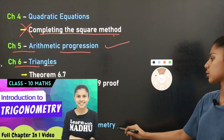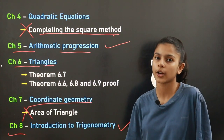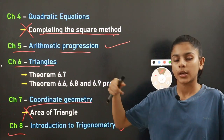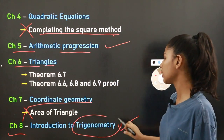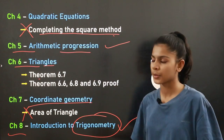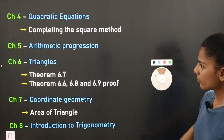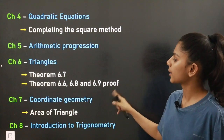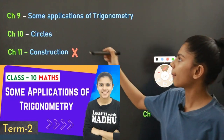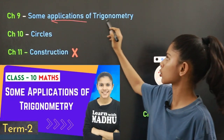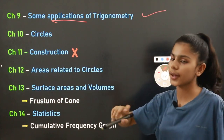Chapter number eight is Introduction to Trigonometry. Nothing has been reduced — it is the whole chapter. It is a very important chapter, especially if you are going to take Maths in class 11 or 12. Chapter number nine covers applications of trigonometry and real-life uses of trigonometry. Nothing has been reduced from this chapter either.